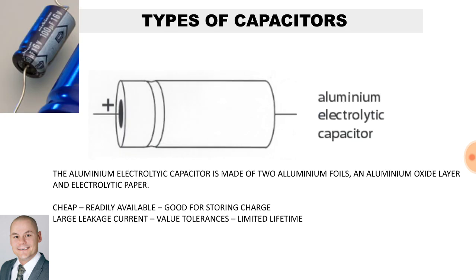There are many different types of capacitors. Here we have an aluminium electrolytic capacitor, made of two aluminium foils, an aluminium oxide layer, and electrolytic paper. The advantages are that they are cheap, readily available, and good for storing charge. However, the disadvantages are that they have a large leakage current, value tolerances, and a limited lifespan.